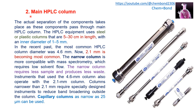The second type is the analytical column, or main HPLC column, where the actual separation of components takes place as they pass through it along with the mobile phase. HPLC equipment uses stainless steel or plastic columns that are 5 to 30 cm in length with an inner diameter of 1 to 5 mm. In recent years, the most common HPLC column diameter was 4.6 mm, but 2.1 mm is now becoming the most common. Narrow columns are more compatible with mass spectrometry, require less solvent flow, less sample, and produce less waste.